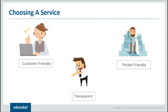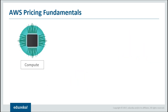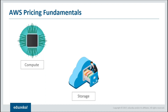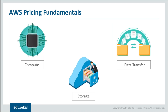Let us move further and try to understand the different pricing fundamentals which AWS has. AWS considers these three fundamentals: compute, storage, and data transfer. If you talk about compute, what AWS does is it charges you on an hourly basis - you can use the compute and processing services at a very low price, and you pay only for the resources which you've used. If you are using the services only for one hour, you'd be paying only for one hour.